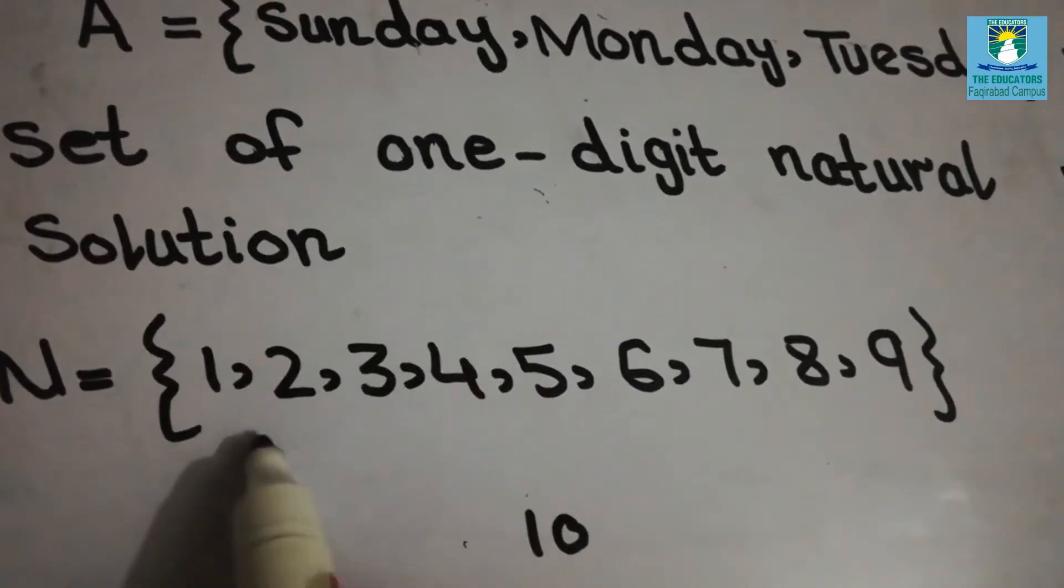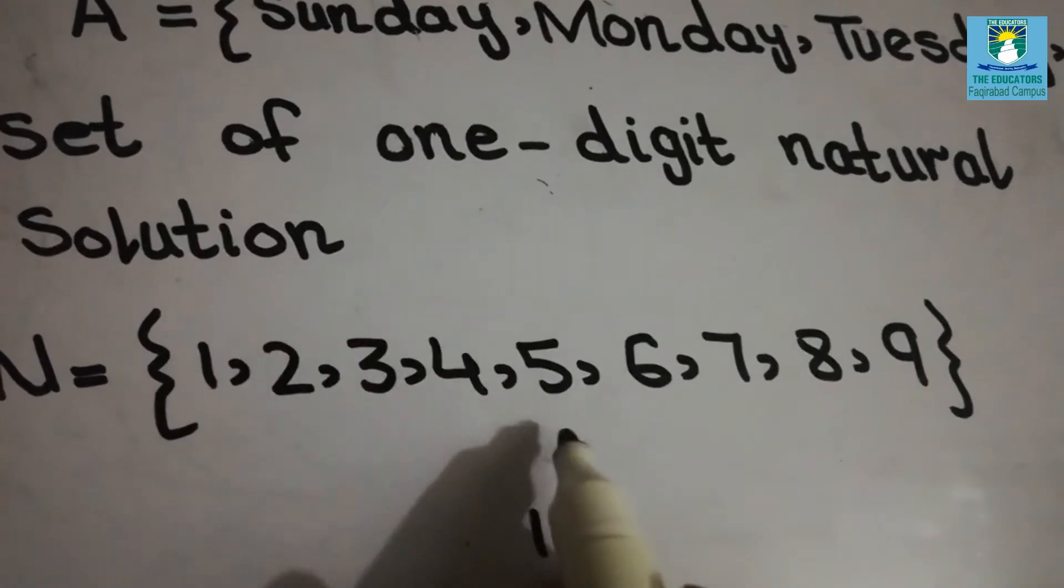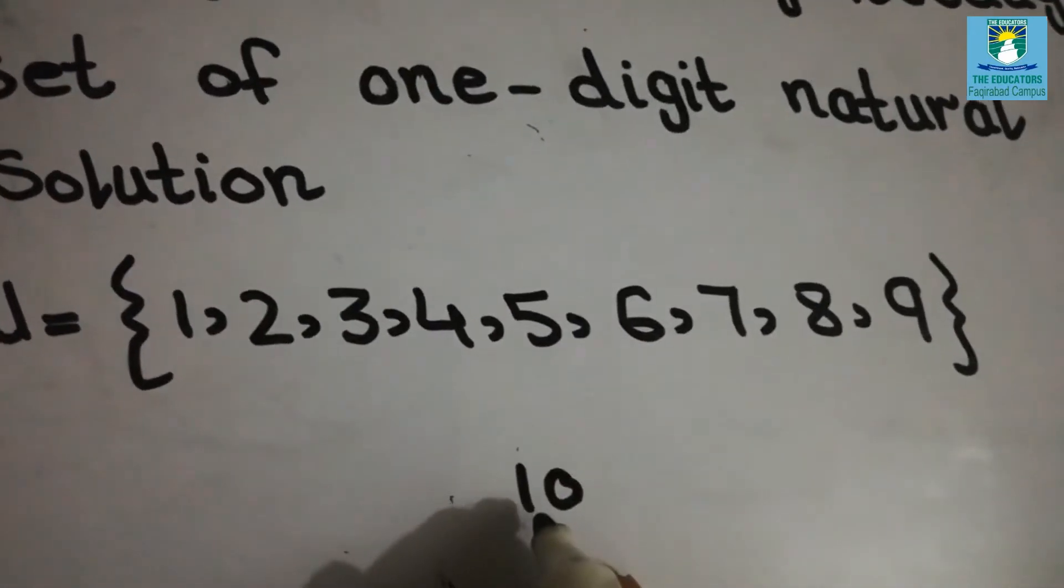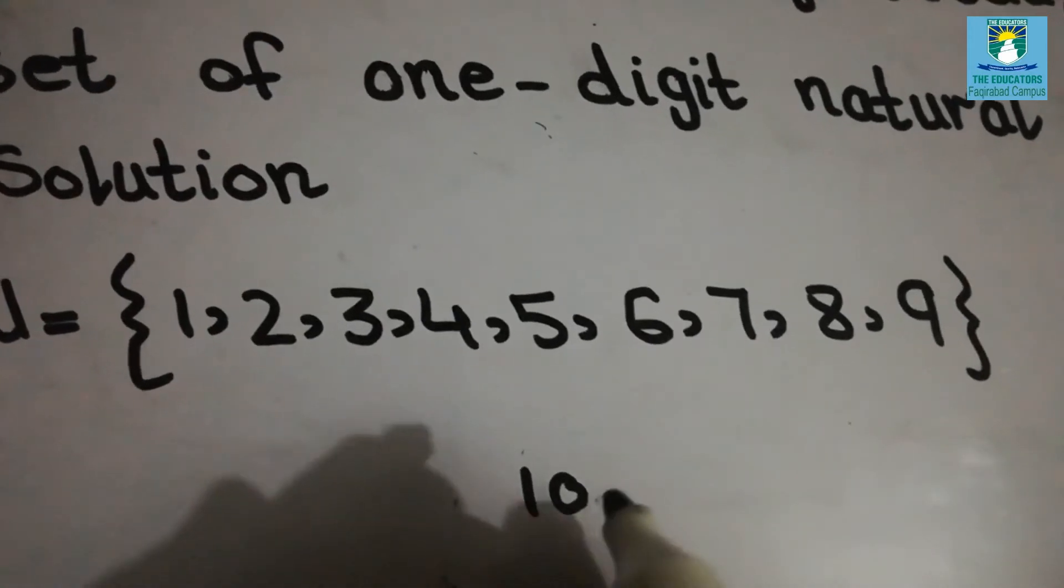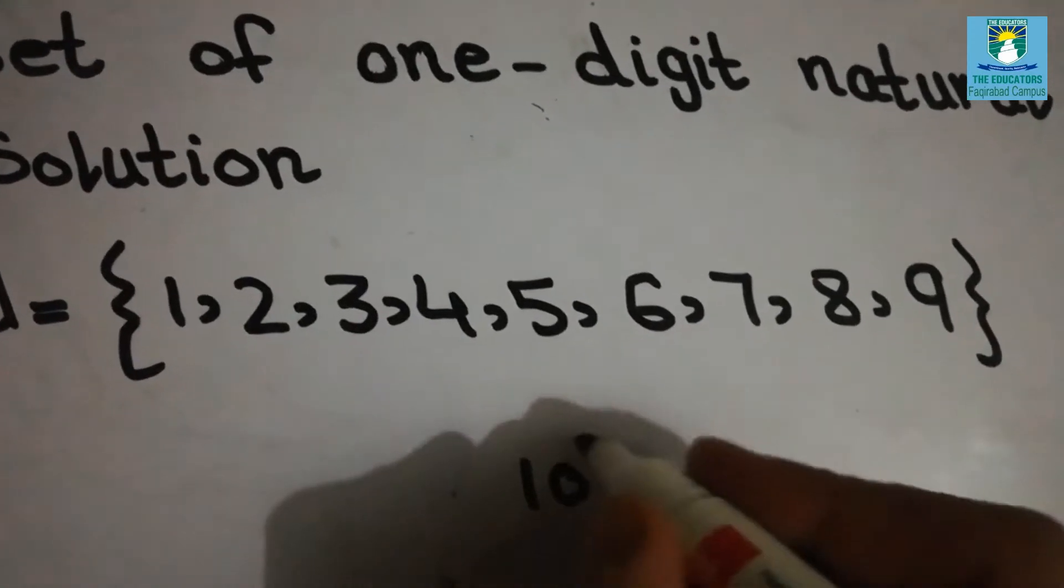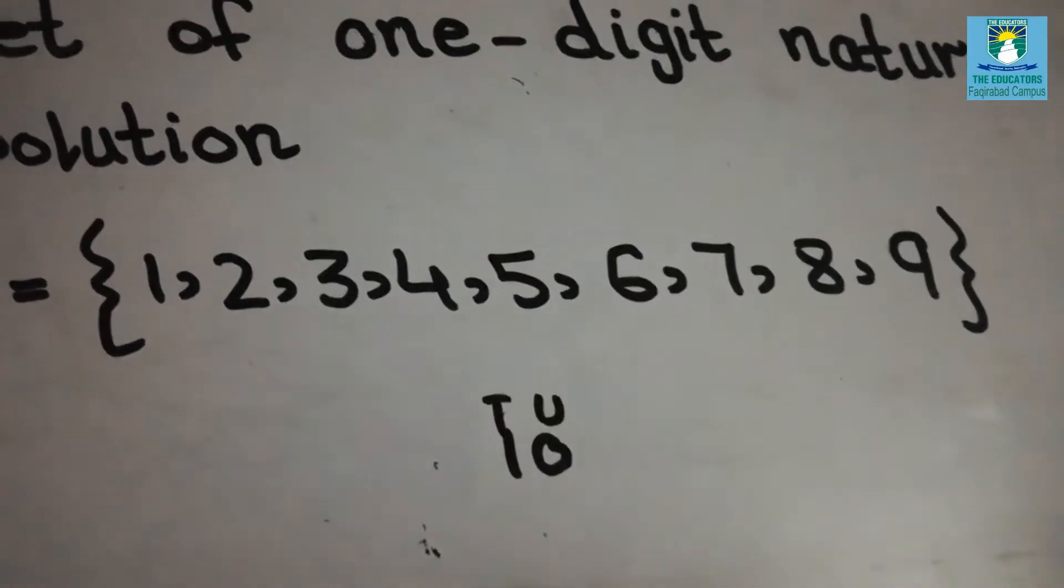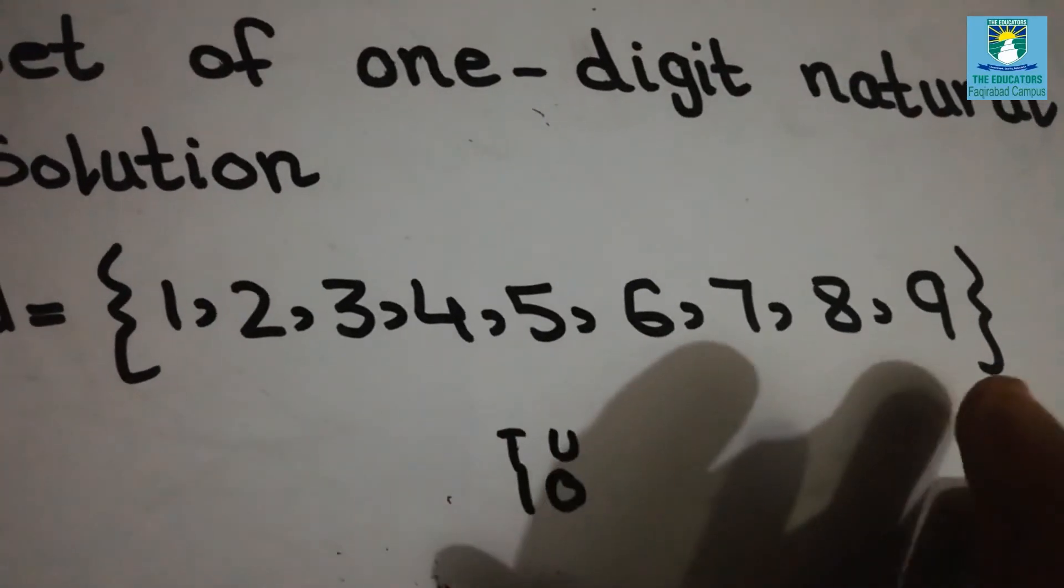Students we will write these digits from 1 to 9. Why? Because 10 has 2 digits. Look units and 10s. And we have to write upto 9.